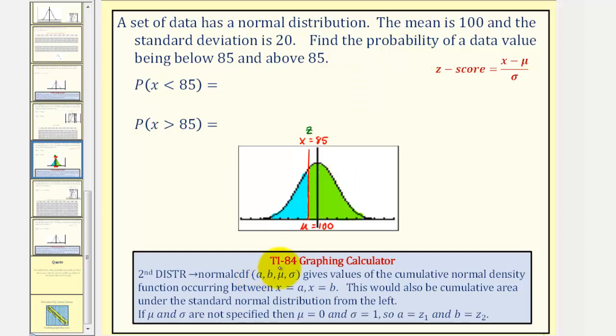But because we'll be using the TI-84, we don't actually have to find the z-score. We can use the normal CDF feature, and then enter a comma b comma mu comma sigma, and this will give the value of the cumulative normal density function occurring between X equals a and X equals b. This would also be the cumulative area under the standard normal distribution from the left.